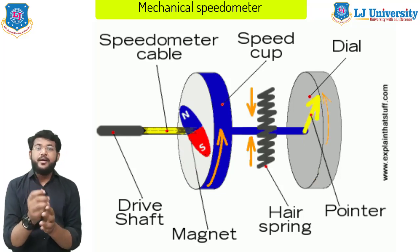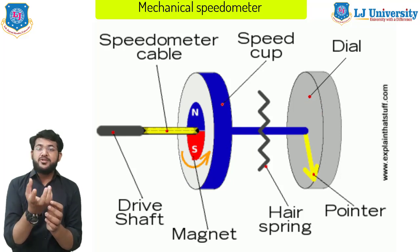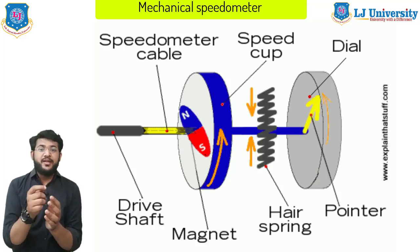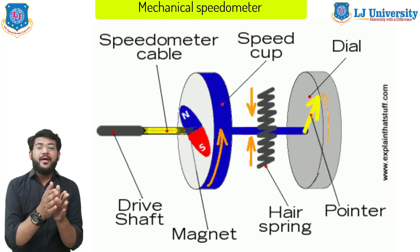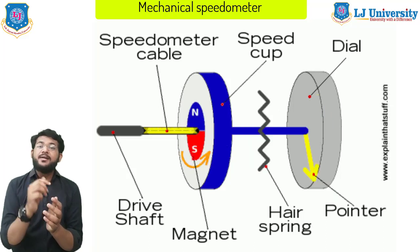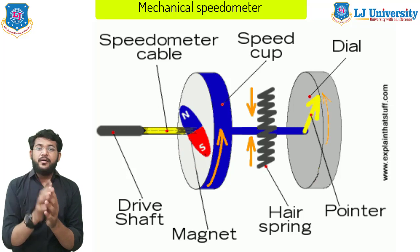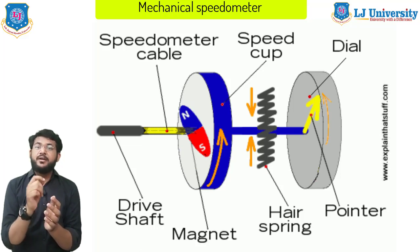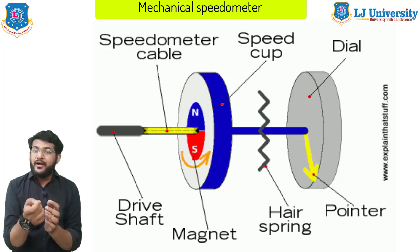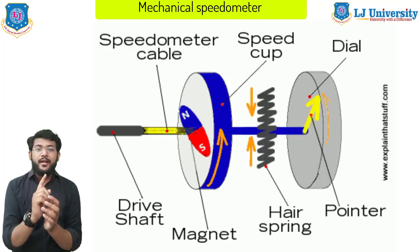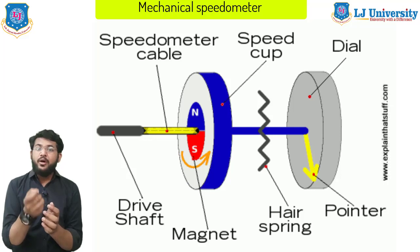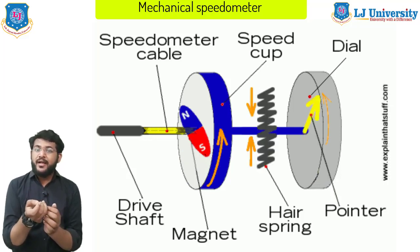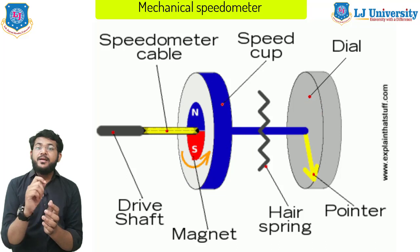On the end of this shaft is a magnet. Positioned close to the magnet is a cup-shaped metal drum which is attached to the needle, giving the reading on the dial. A small coiled hair spring holds the needle at zero. When the car moves, the drum is attracted by the magnet, so as the magnet turns the drum turns too. The faster the car is traveling, the greater the pull of the magnet on the metal drum and the further the needle moves around the dial. The restriction force of the hair spring also increases as the needle moves.